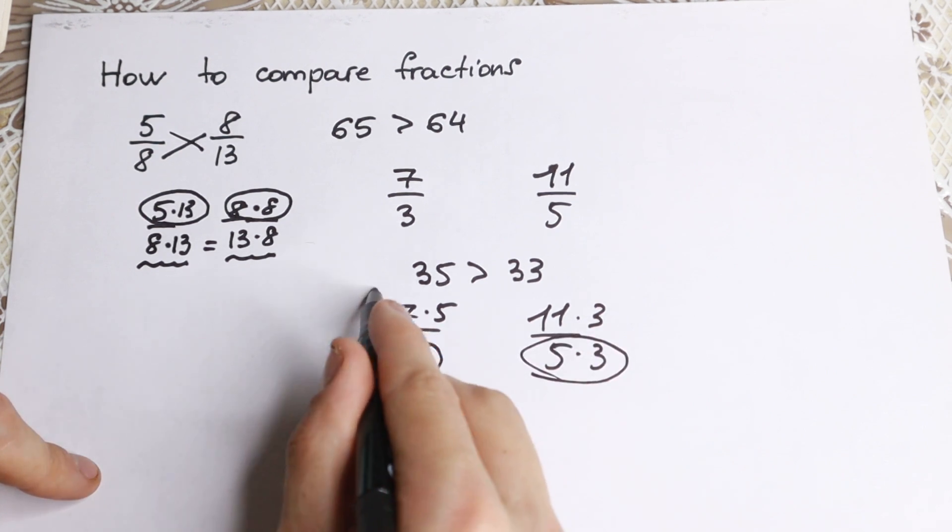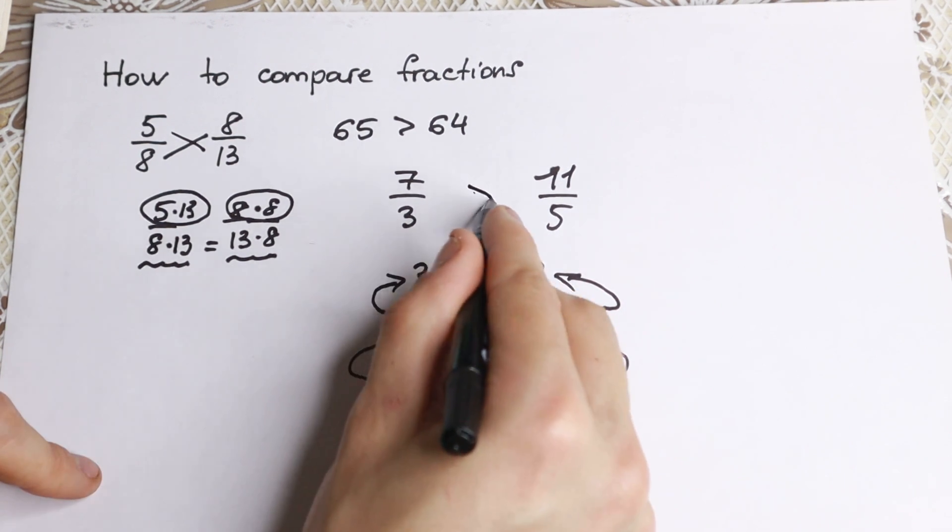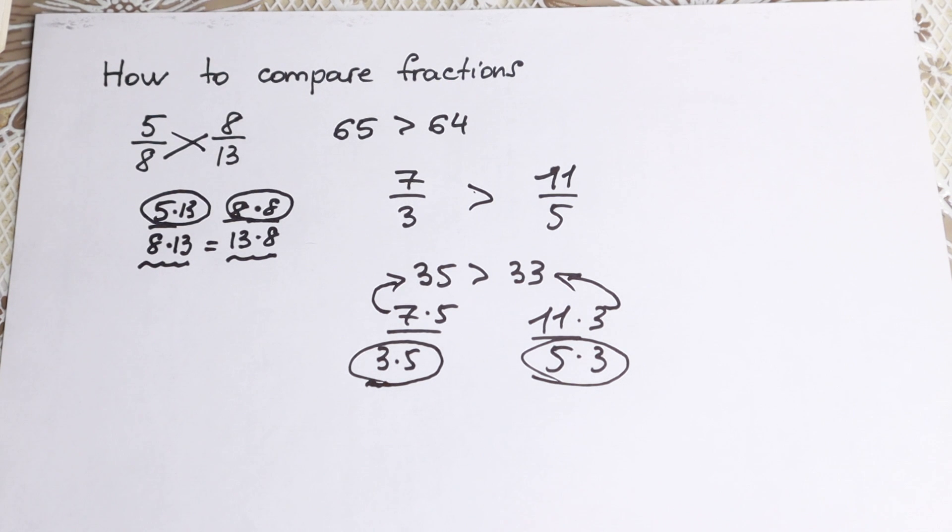And right now we can compare 7 times 5 equals 35 and 11 times 3 equals 33. This on the left-hand side is greater. So I hope you understand this step.